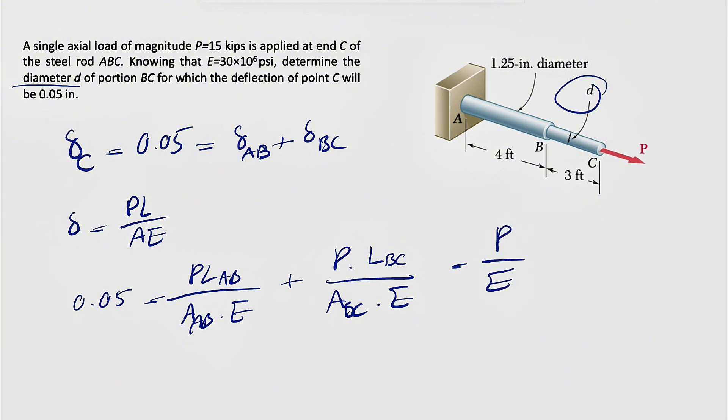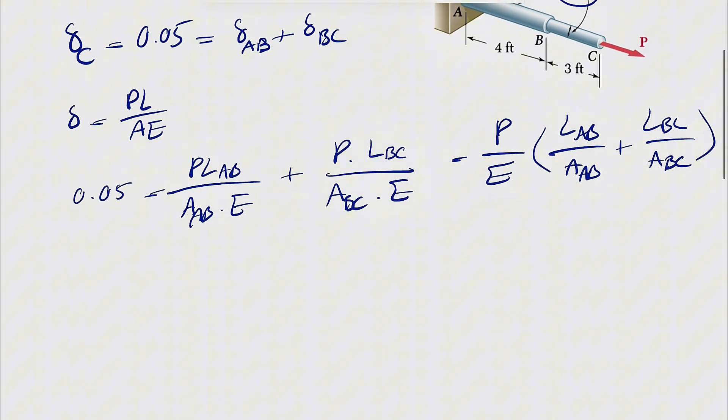Here we can just factor P over E, and we're going to have LAB over area of the AB plus LBC over area of BC.